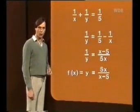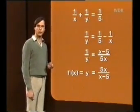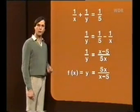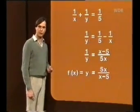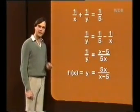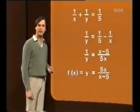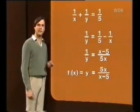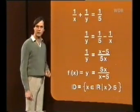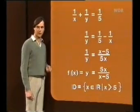Das ist eine gebrochen rationale Funktion, denn x kommt im Nenner vor. Diese Funktion ist nicht definiert für x = 5, denn da wird der Nenner zu 0. Und für alle Zahlen kleiner als 5 ist diese Funktion auch nicht definiert — das würde bedeuten, der Gegenstand ist näher an der Linse als die Brennweite, was kein Bild ergibt, da die Lichtstrahlen auseinandergehen. Der Definitionsbereich dieser gebrochen rationalen Funktion sind also alle reellen Zahlen größer als 5 — eine nach rechts unbeschränkte Definitionsmenge.